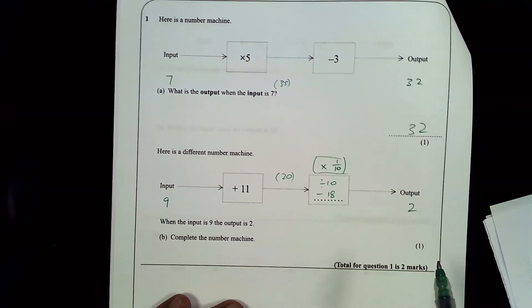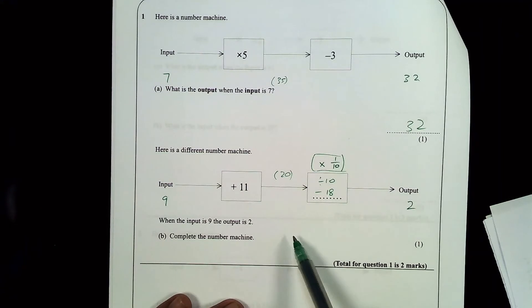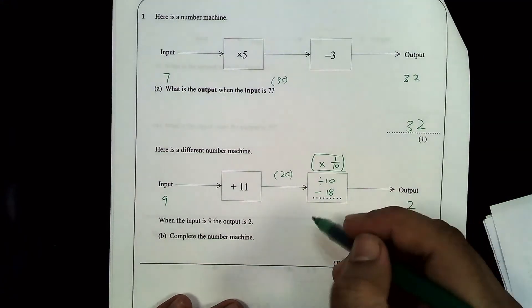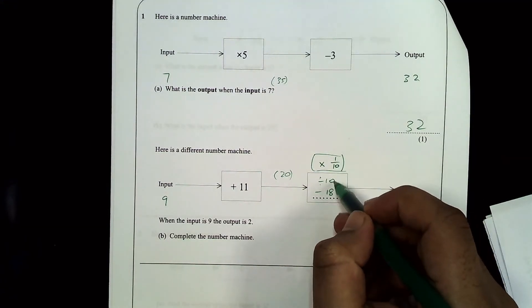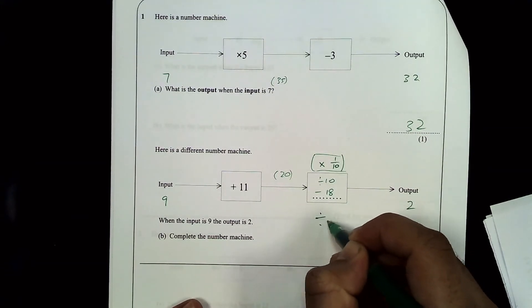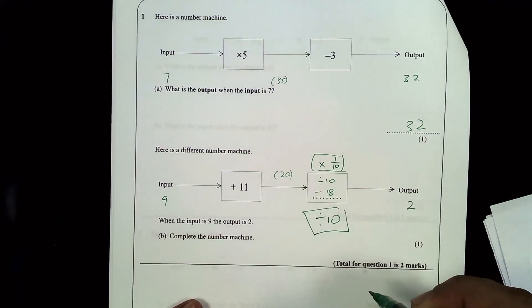And that's it. So a nice, simple, two-mark question. One for the first, one for the second. So complete the number machine. Well, obviously if I was doing this in an exam, I wouldn't write all three of them. I'd just choose one. So I might just write divide by 10. That would be my answer.